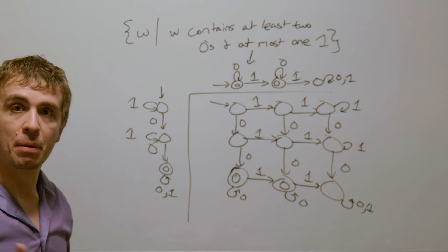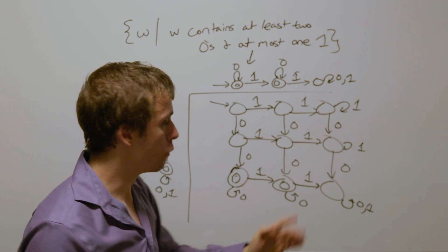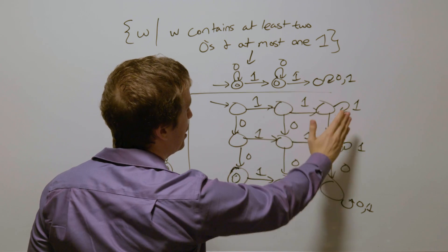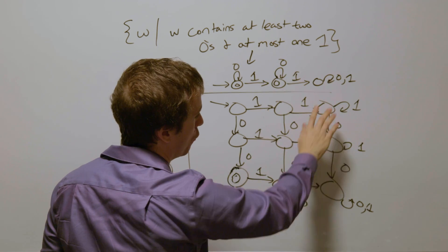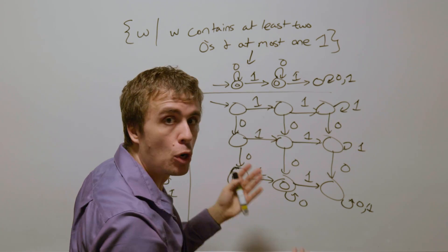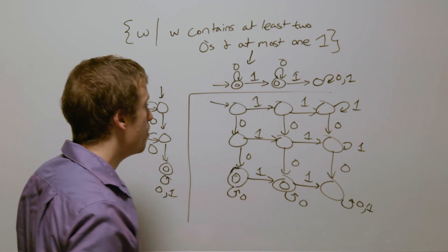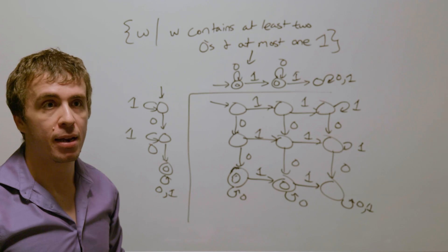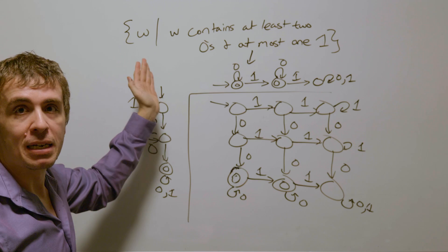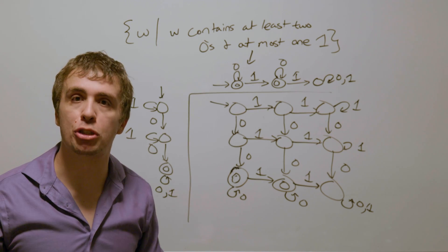So notice that we can actually make this a bit simpler, because once we have gotten to this last column, the game's over, because there's no chance that we're going to satisfy being at most one occurrence of one, because we have gotten two ones in order to get to that last column. We can merge these three non-final states into a single non-final state, but you're not going to get anything smaller than that. So this is a deterministic finite automaton for all the strings, binary strings w, that contain at least two zeros and at most one occurrence of one.